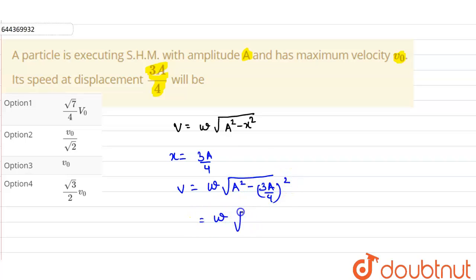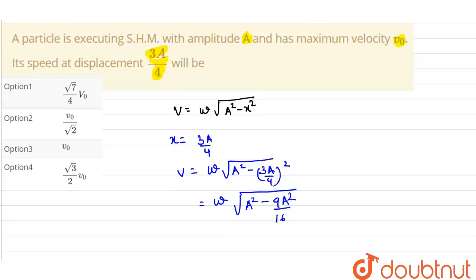This will be equals to omega under root of A square minus 9A square upon 16.